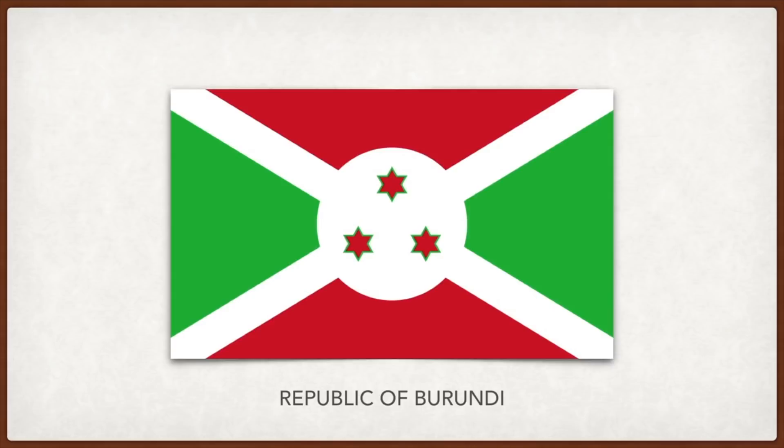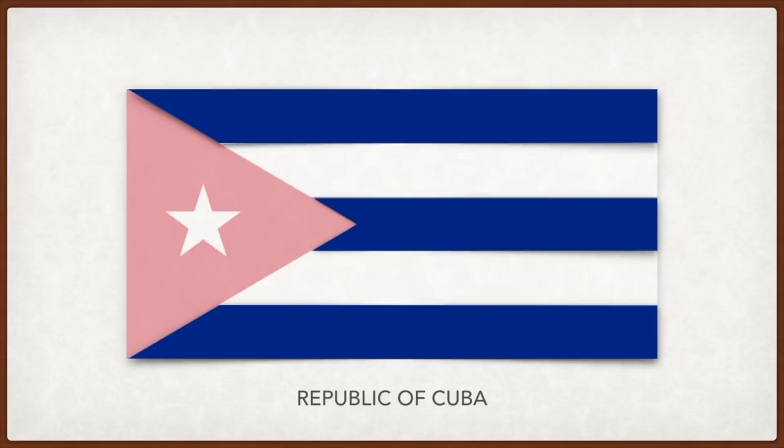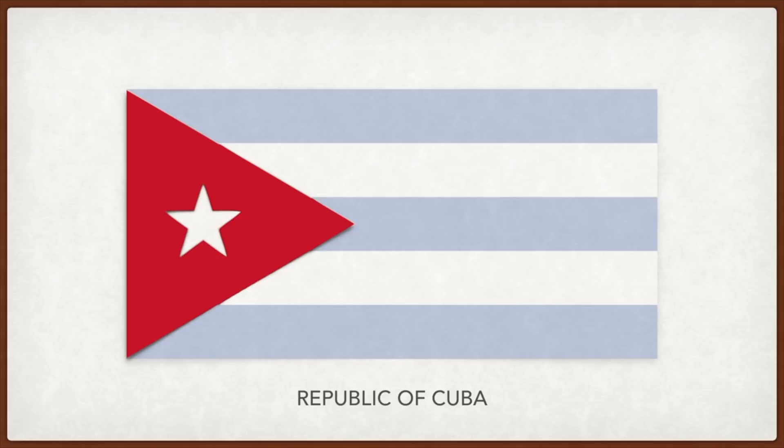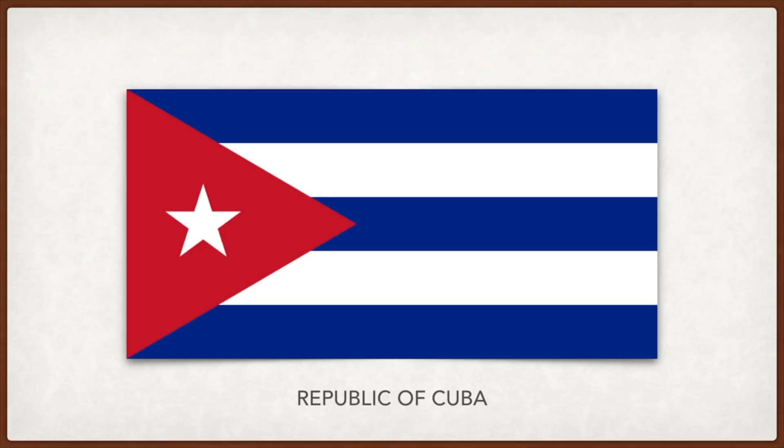Cuba: the three blue stripes represent the three old divisions of the island, the two white stripes represent the purity of ideals and the light of patriotic Cubans, the triangle stands for liberty, equality, and fraternity, the red color represents the blood spilt for independence, and the star used to represent a new star to be added to the United States but now means freedom.